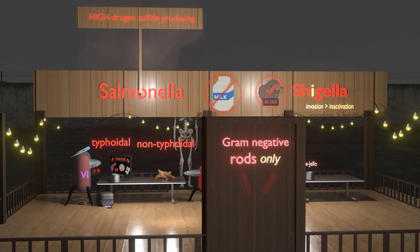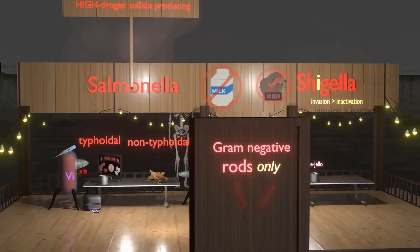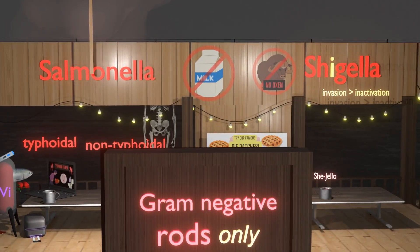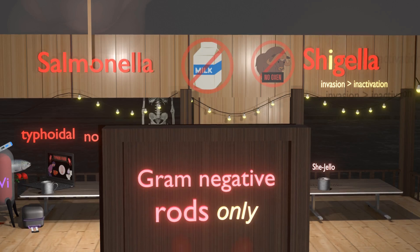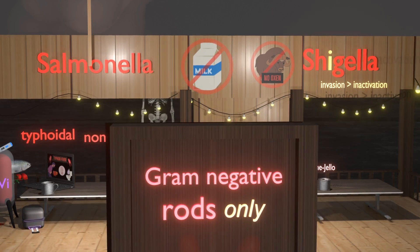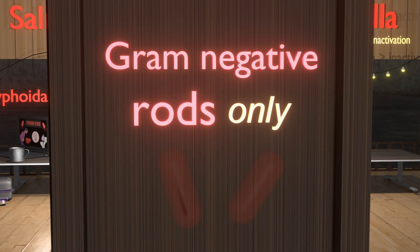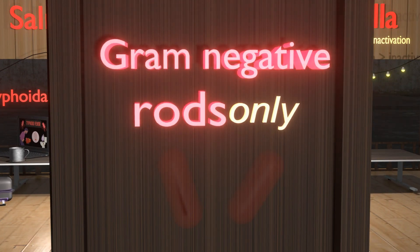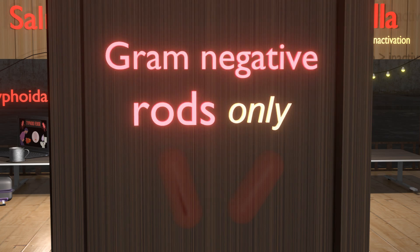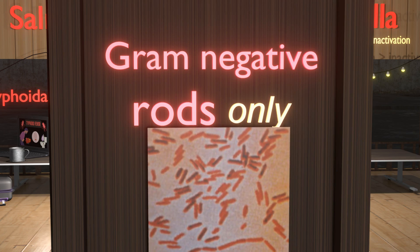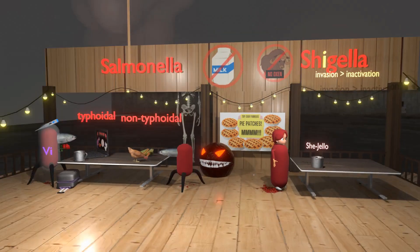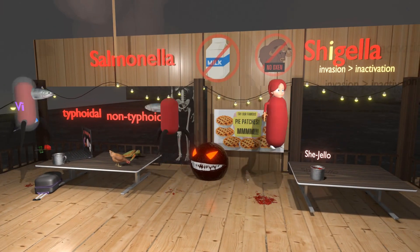Let's talk about Shigella and Salmonella. Let's go into this restaurant, the Shigella and Salmonella restaurant, to learn about them. We begin by noting that on the door it says gram-negative rods only, because Shigella and Salmonella are both gram-negative rods. They stain red in gram-staining due to their thin peptidoglycan wall, and they are rod-shaped.